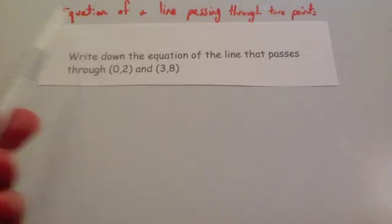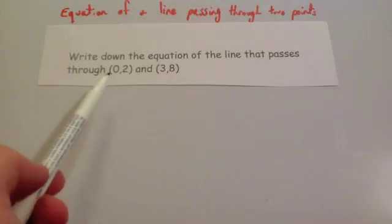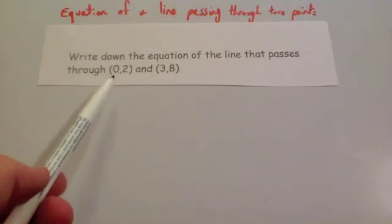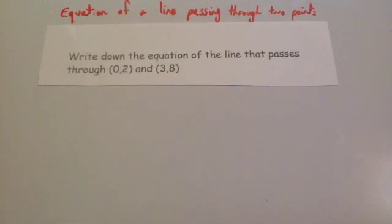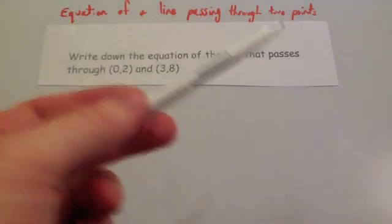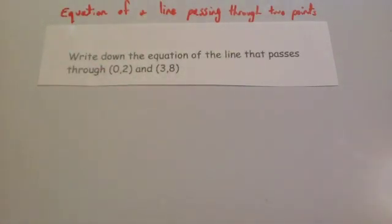In this video, we're going to look at how to find the equation of a line that passes through two points. So here's a typical question: write the equation of the line that passes through (0,2) and (3,8). Before you watch this video, I'd highly recommend watching the video gradient of a line passing through two points, but I will recap part of it now anyway.